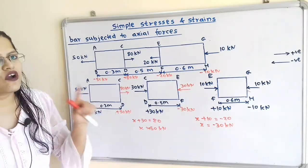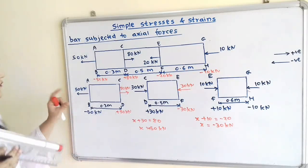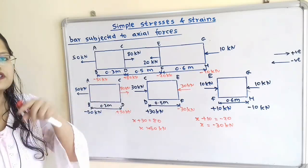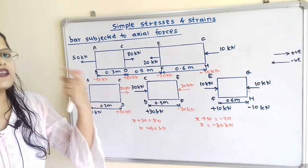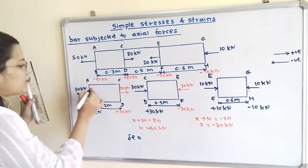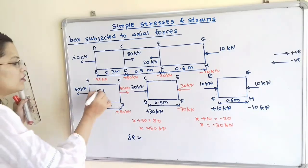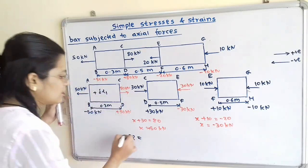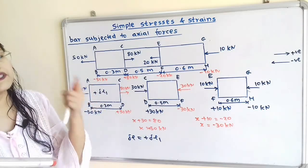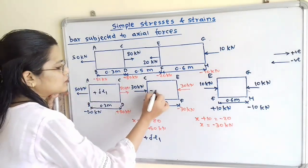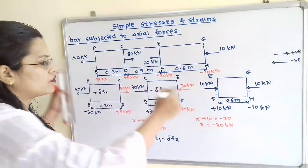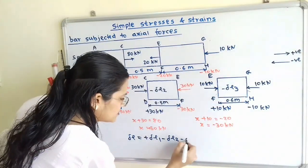Now we have to find total elongation delta L in the bar. Observing the first portion of the bar, a tensile force is present — when we apply tensile force, its length delta L increases, so delta L includes plus delta L1. For the second portion, compressive force means length decreases, so minus delta L2. And the third portion also has compressive force, so minus delta L3.